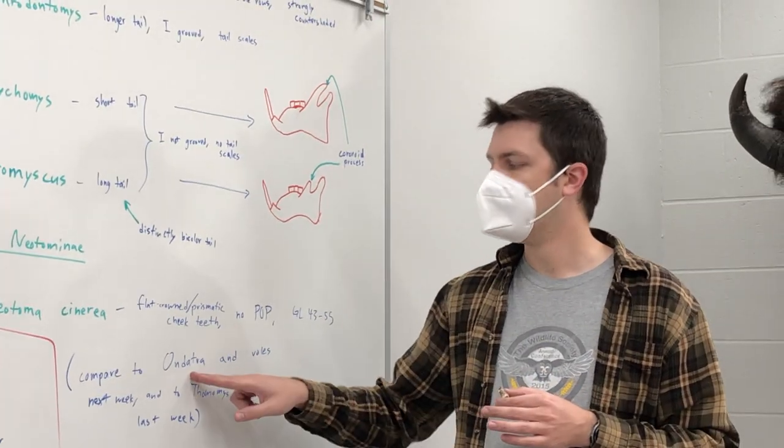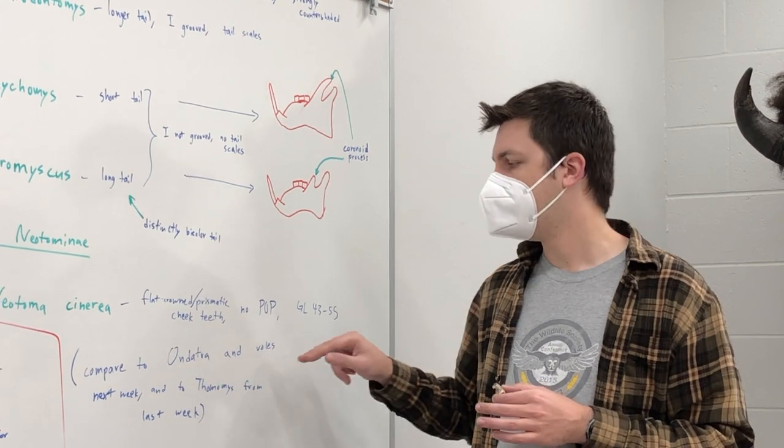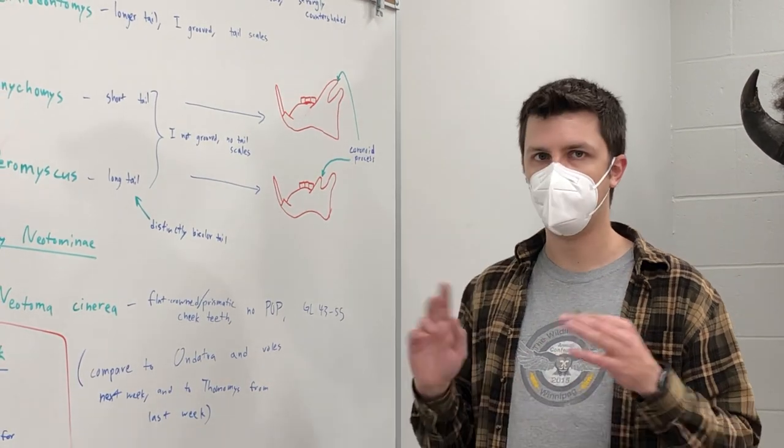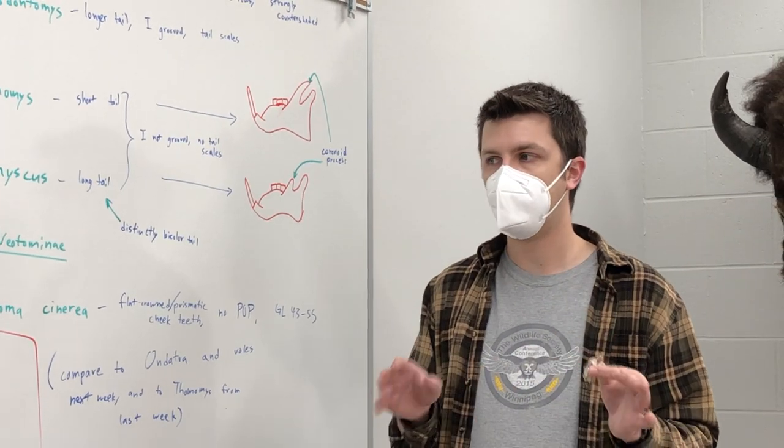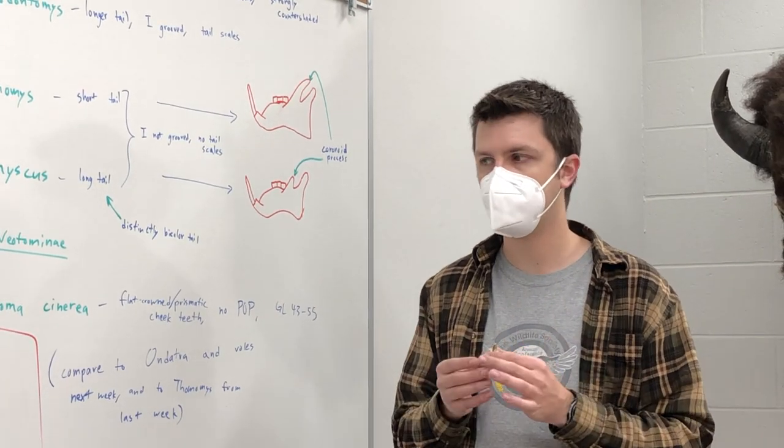all of the species that we'll look at, Ondatra the muskrat and a bunch of voles, all have prismatic teeth. So I'll mention ways to differentiate the different prismatic teeth next week.